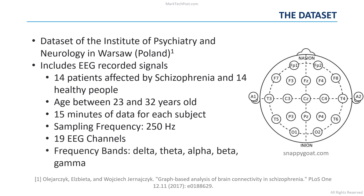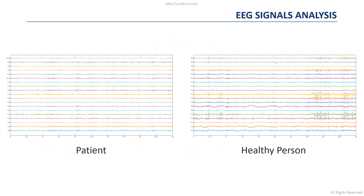The signals of each channel were filtered in the following physiological frequency bands: delta, theta, alpha, beta, and gamma. Thanks to the high temporal resolution of EEG signals, their analysis provides unique information about the interactions between different frequency bands. It has been shown that such interactions are altered in schizophrenia.